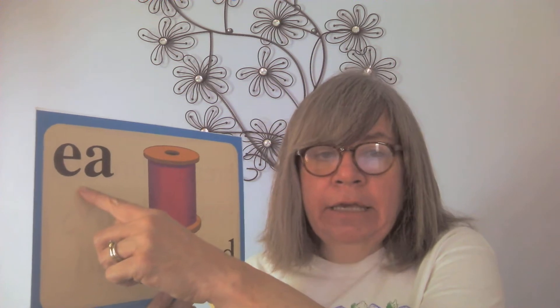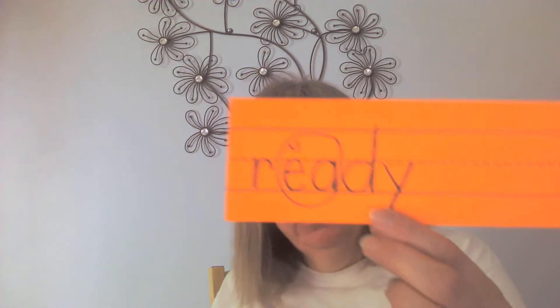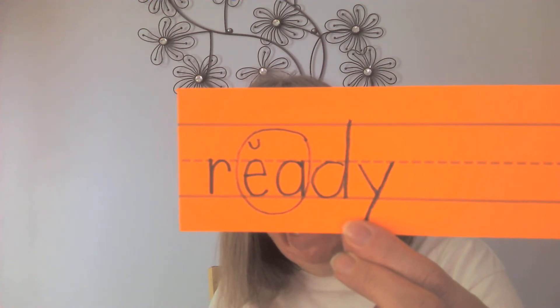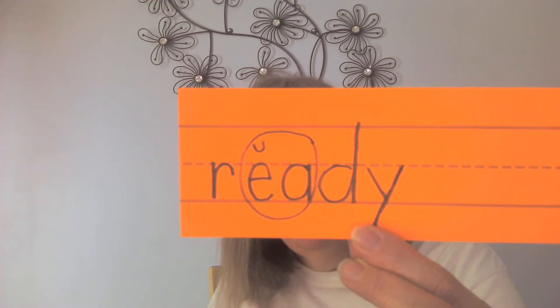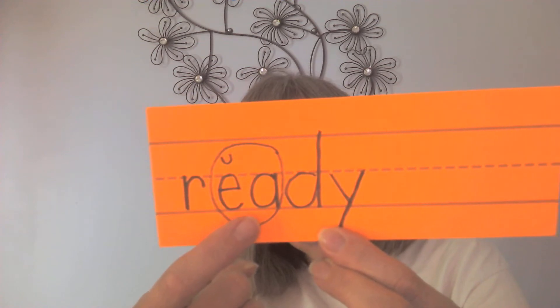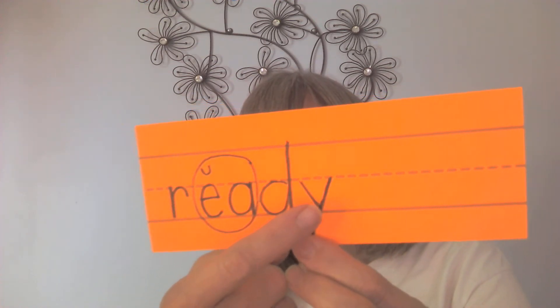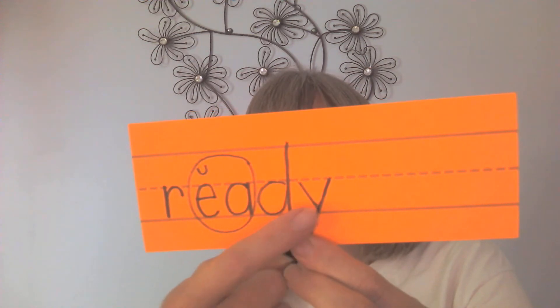The last sound we really want to focus on today is EA can say /ĕ/, like in 'thread.' E is making its short sound — /ĕ/. You'll see that on your seatwork today because one of the two new sight words is this word. I made the E have its short sound with a smile over top. The word is 'ready' — EA says /ĕ/, then D, and Y says /ē/ on a two-beat word.